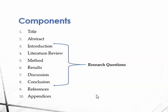Now here are the ten components of a master's thesis: the title, abstract, introduction, literature review, method, results, discussion, conclusion, references, and appendices.